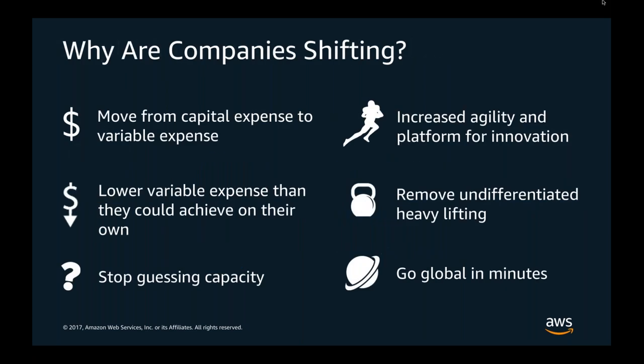So let's get started with trends. Companies are shifting to the cloud for several reasons: moving from capital expense to variable expense, lowering costs, and eliminating the need to over-provision capacity. It increases agility and provides a platform for innovation. One of AWS's key mechanisms is taking the undifferentiated heavy lifting away from businesses, allowing them to focus on looking after their own customers.